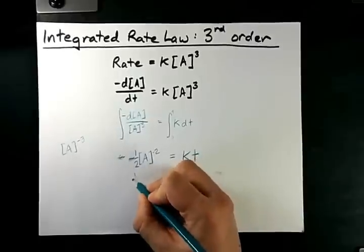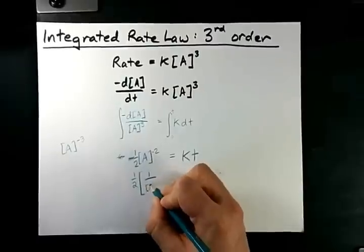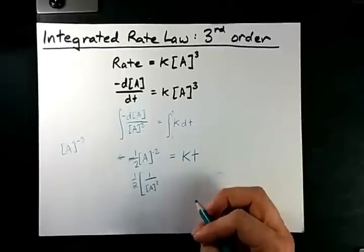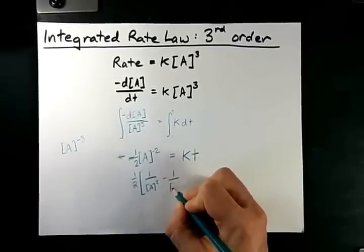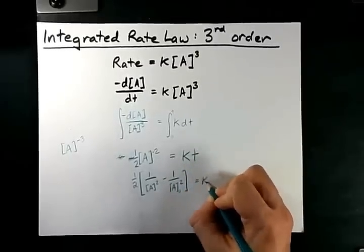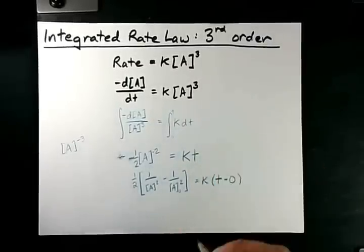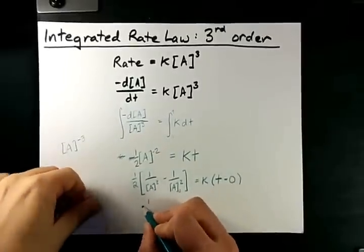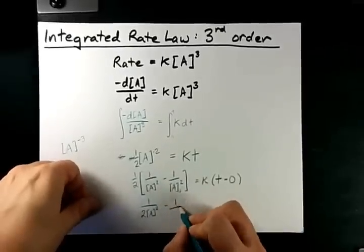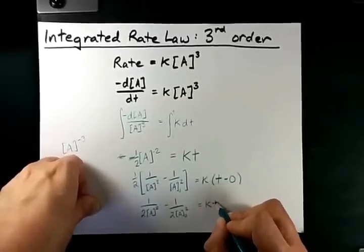And so what that means is that we have one-half, 1 over the concentration of [A] at any particular time squared, minus 1 over the initial concentration squared, equals k times t minus time 0. Now that's going to cancel out anyways. So I end up with 1 over 2[A] squared minus 1 over 2[A]₀ squared equals kt.